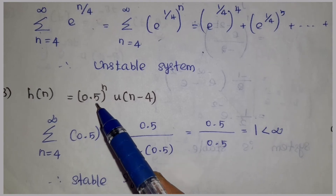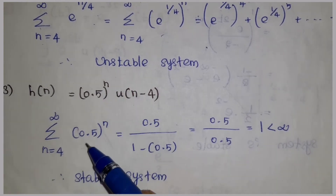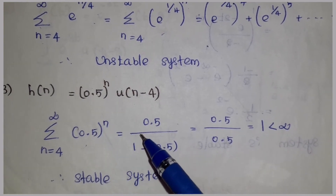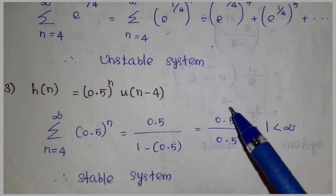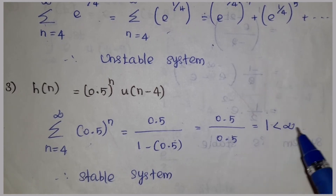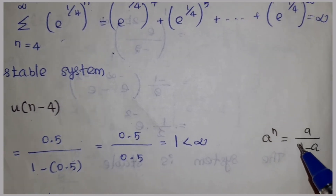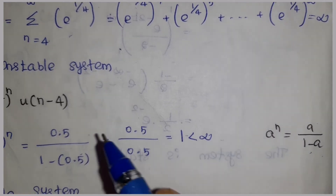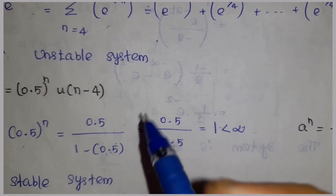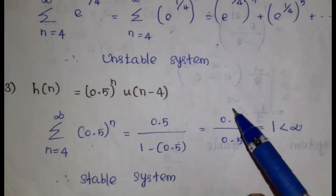Third discrete problem: h(n) = (0.5)^n u(n). The limit runs from 4 to infinity of (0.5)^n. Since |0.5| is less than 1, using the geometric series formula a/(1-a), the summation converges to a finite value equal to 1. Infinity is not present — a finite value is present. Therefore, the system is a stable system.